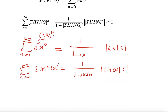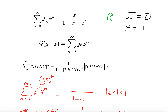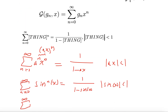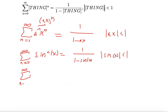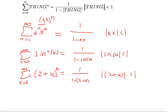I encourage you to go into Desmos and play around with different functions, composing them with the geometric series or with the Fibonacci generating function — you'll see the same results. You can update the radius of convergence based on your entry, remembering that size of thing must be less than 1. For instance, (2+x)^n sums to 1 over 1 minus (2+x), as long as the absolute value of 2+x is less than 1.